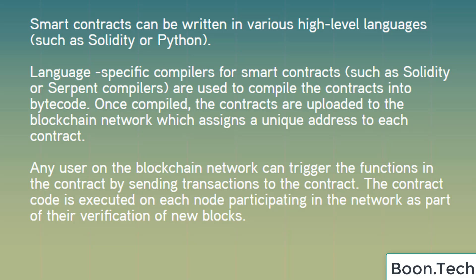Once compiled, the contracts are uploaded to the blockchain network which assigns a unique address to each contract. Any user on the blockchain network can trigger the functions in the contract by sending transactions to the contract. The contract code is executed on each node participating in the network as part of their verification of new blocks.